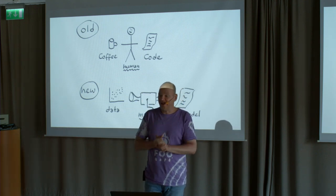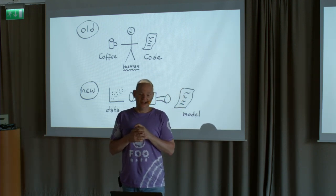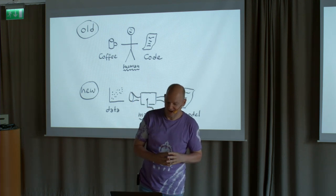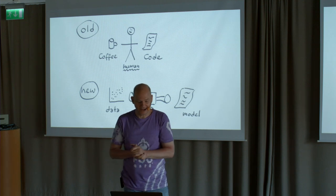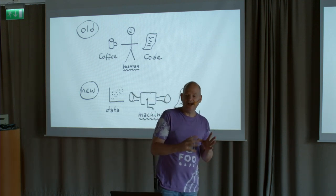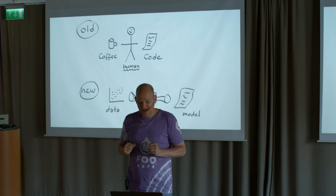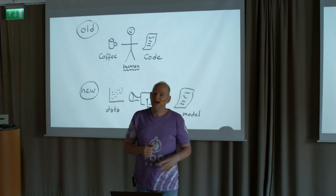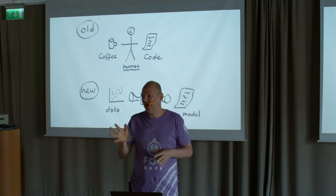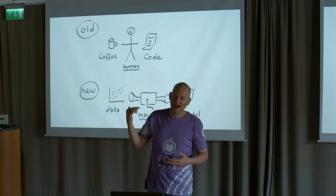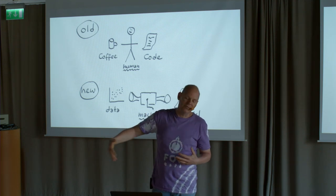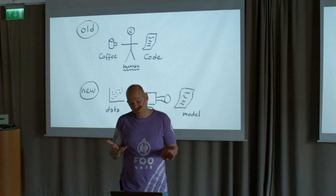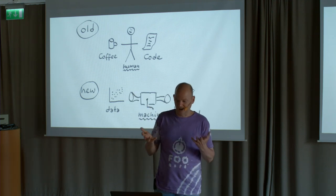The old way to create code is we have a human — the human takes coffee or beer and translates it into code. That's software 1.0. Software 2.0 is where we have a machine, we give it a lot of data, and out comes code. Just like in the SQL case we don't call it code but a query, in this case we don't call it code but a model. But really, it's just code.